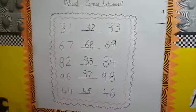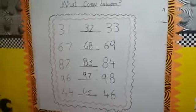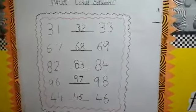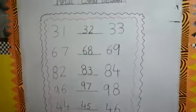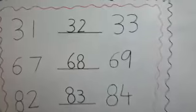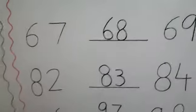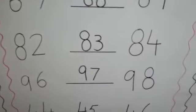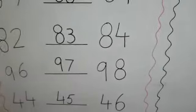Now, I am going to review the whole video. What comes between means in the center. 31, 32, 33. 67, 68, 69. 82, 83, 84. 96, 97, 98. 44, 45, 46.